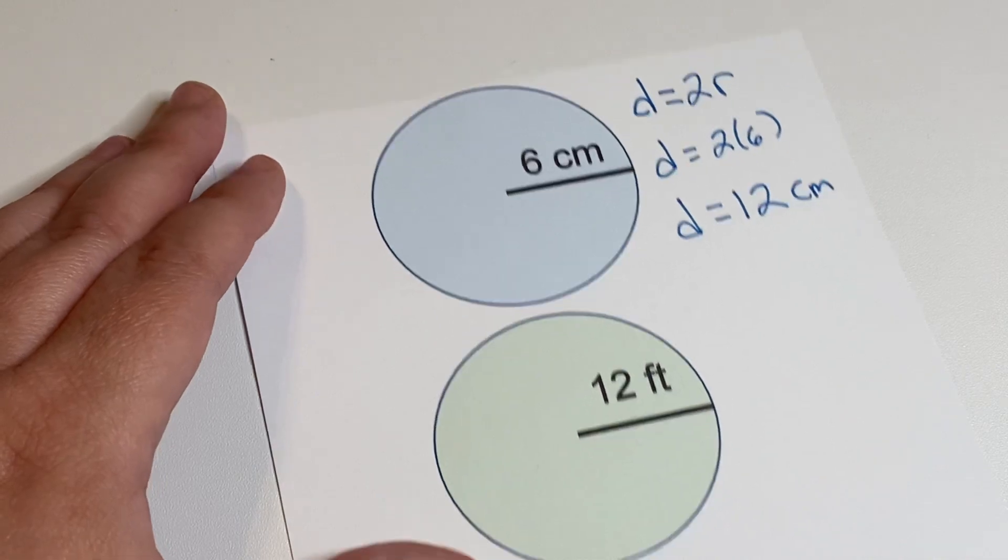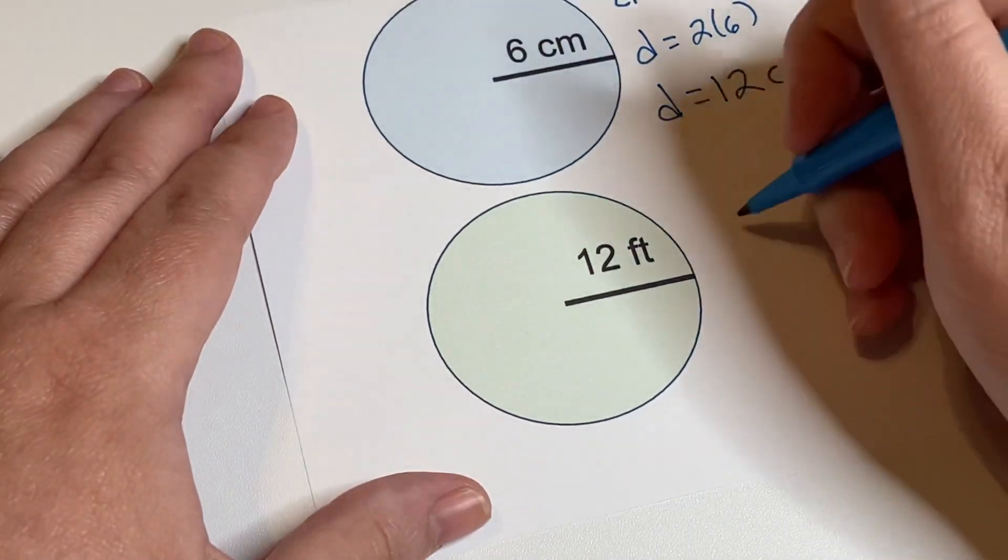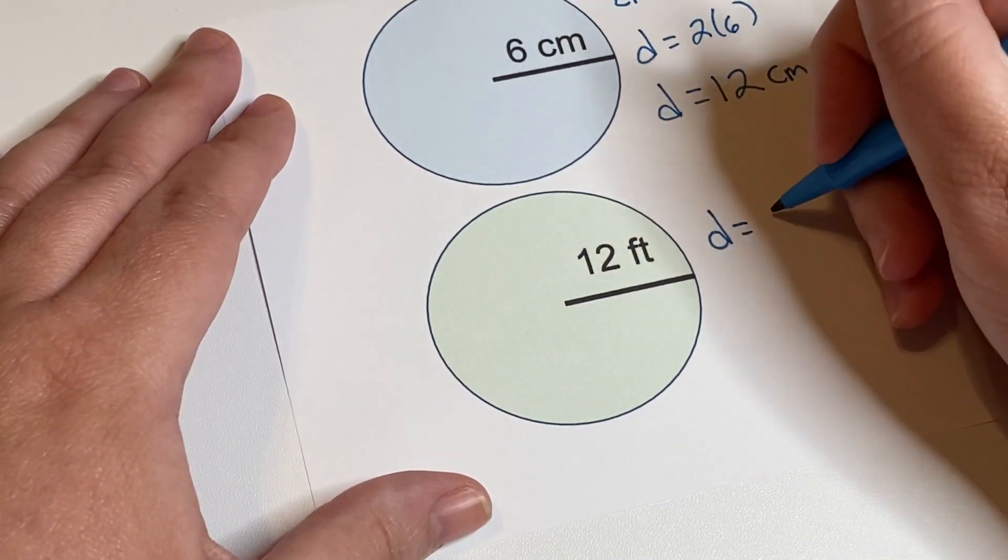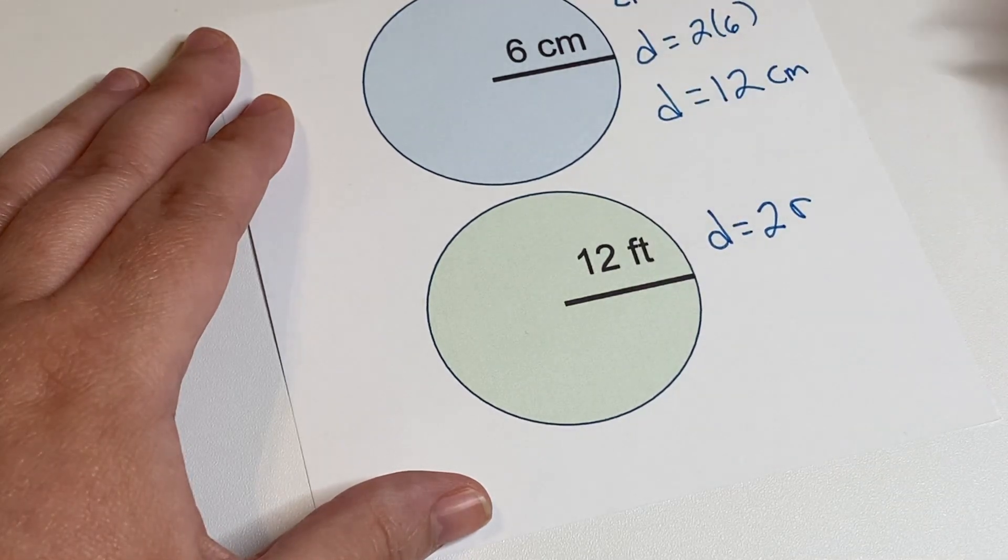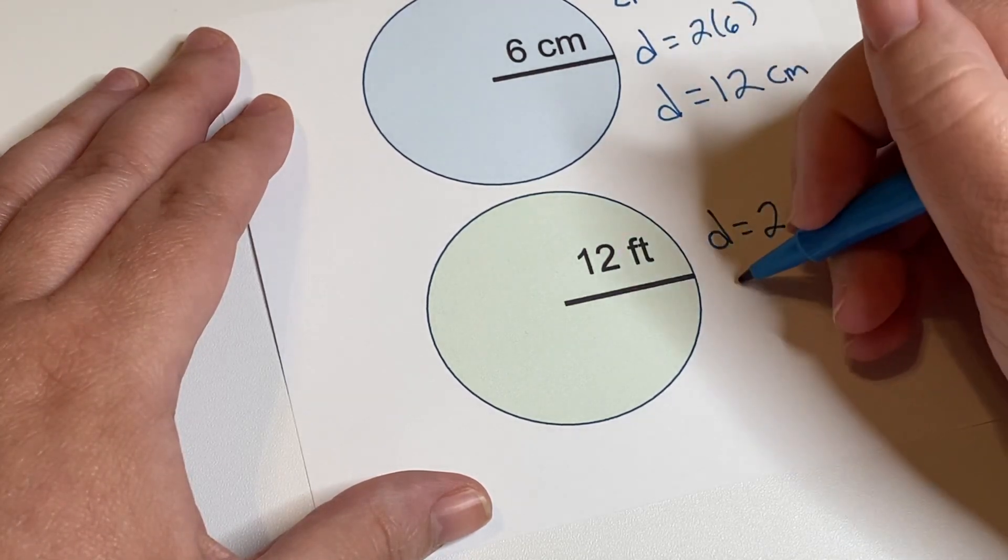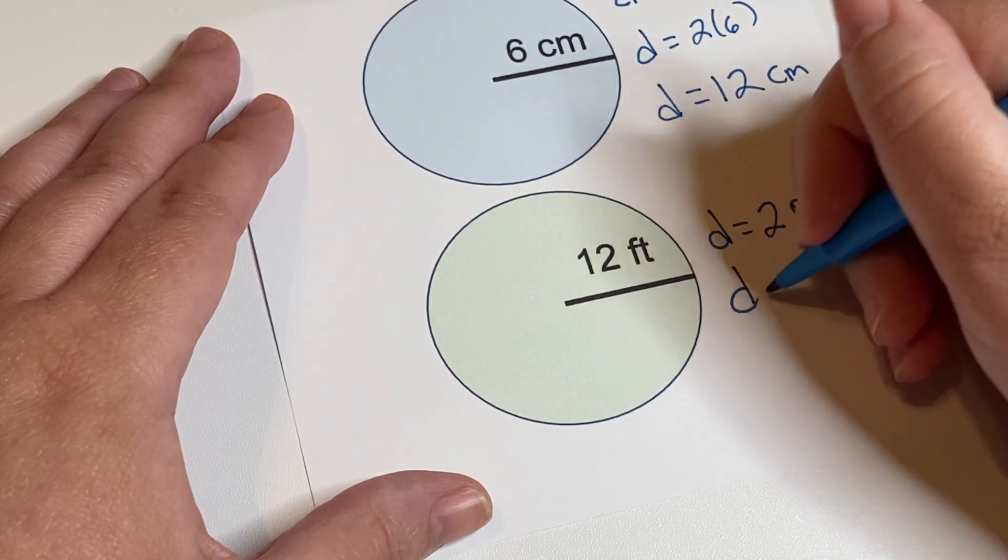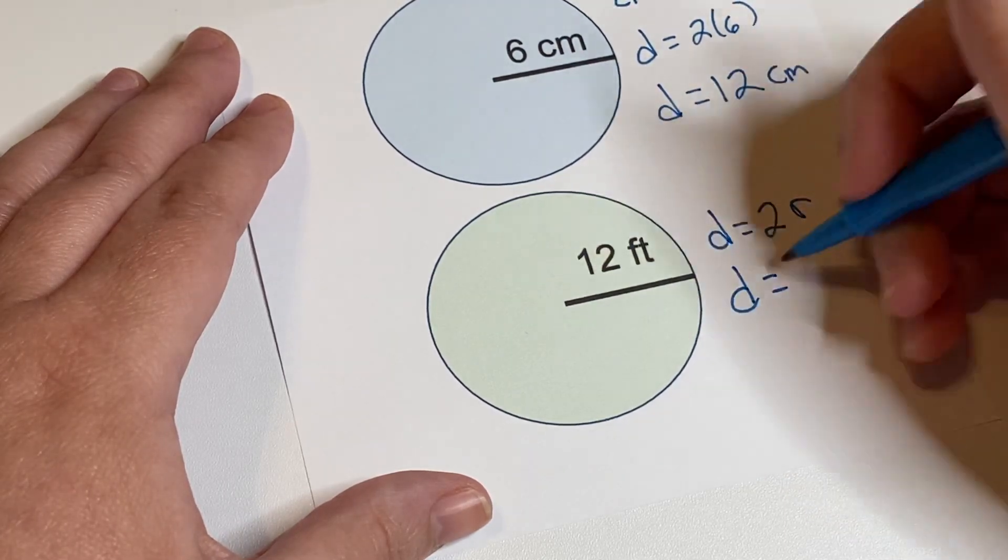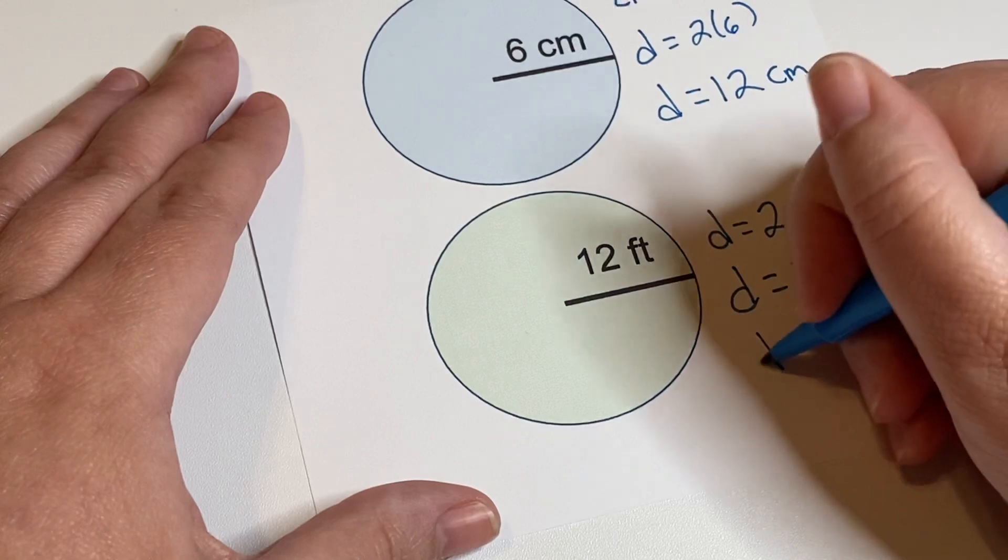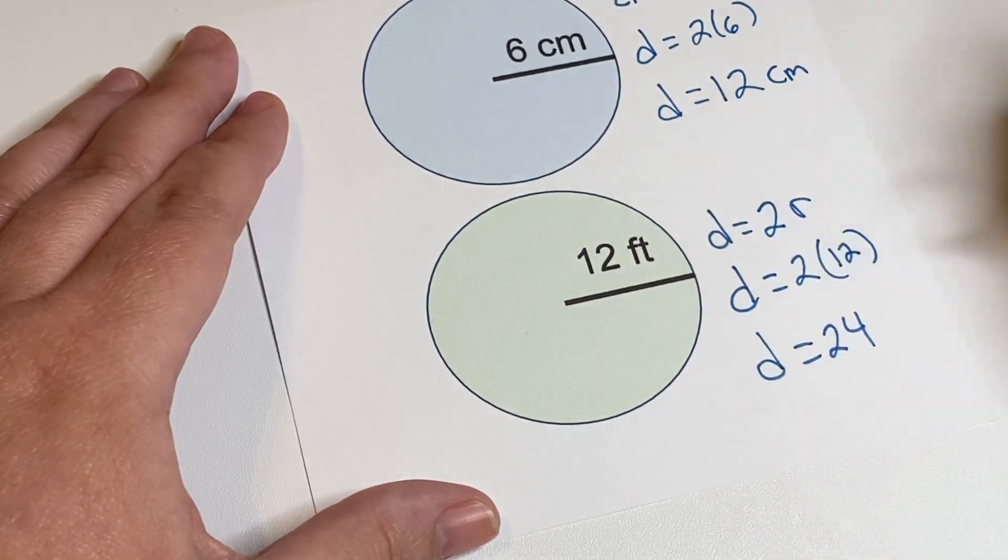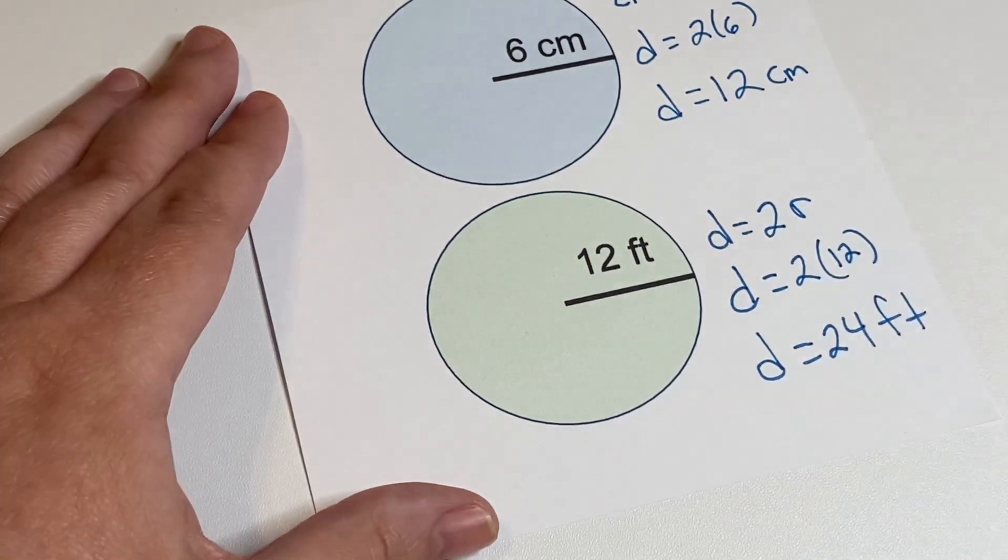Okay and then same thing for this one. The diameter is equal to two of the radius. So if I want to solve for the diameter I'm gonna need to plug in this twelve. I'm gonna put that right here for the radius. Take out the r put in the twelve and I'm gonna get diameter equals 24 and this is feet.